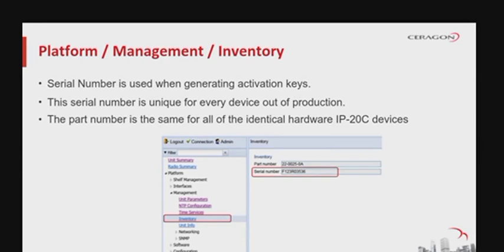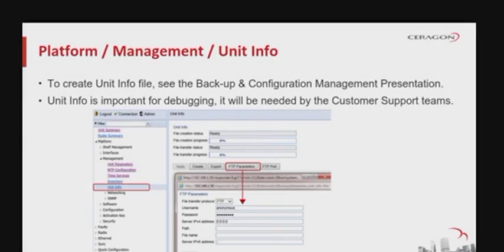Find the serial number under Platform > Management > Inventory. The unit info file is a troubleshooting tool to help the customer support team analyze and troubleshoot errors. The process for creating this file will be detailed in other sessions. For now, remember that you need a file transfer protocol server to create and export this file, and it can be done under Platform > Management > Unit Info.